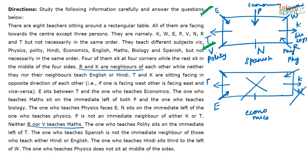The one who teaches Hindi sits third to the left of W. So I need to fix W's facing direction. Assume W is facing inward — then third to the left would be one, two, three: that position already has N teaching Spanish. So clearly W is not facing inward; W is facing outward. With W facing outward, third to the left is one, two, three — that's T. So T has to teach Hindi, and therefore E teaches English. This is the final arrangement.